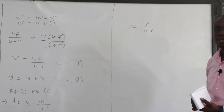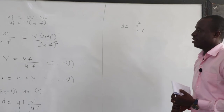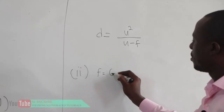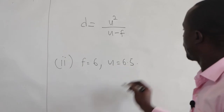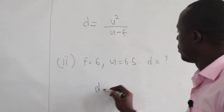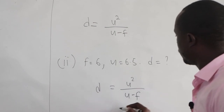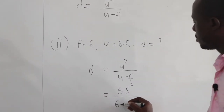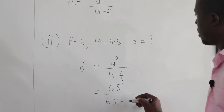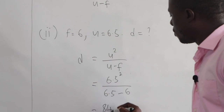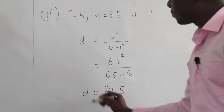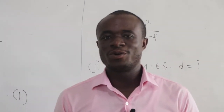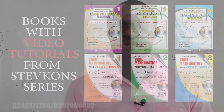We have expressed d in terms of u and f. Now substituting f equals 6 and u equals 6.5: d equals 6.5 squared over 6.5 minus 6, which gives 84.5. Thanks for watching — subscribe for more videos to help in your preparation for your final exams.